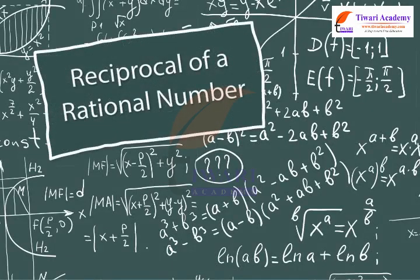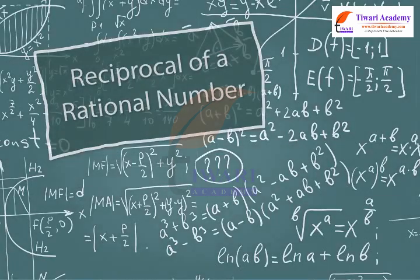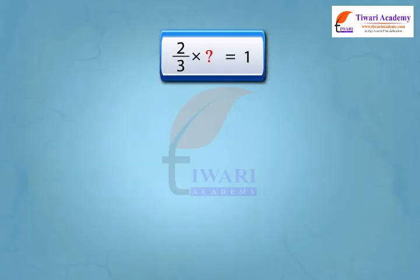Let us learn reciprocal of a rational number. By which rational number would we multiply 2 upon 3 to get the product 1?